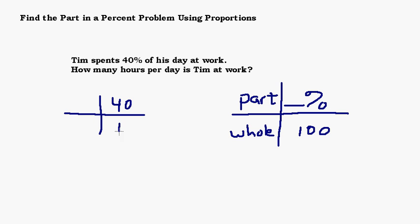Okay, so 40 over 100. And then the part over the whole, we don't know the part. We don't know what part of Tim's day he spends at work out of how many hours per day. That would be 24 hours in a day.